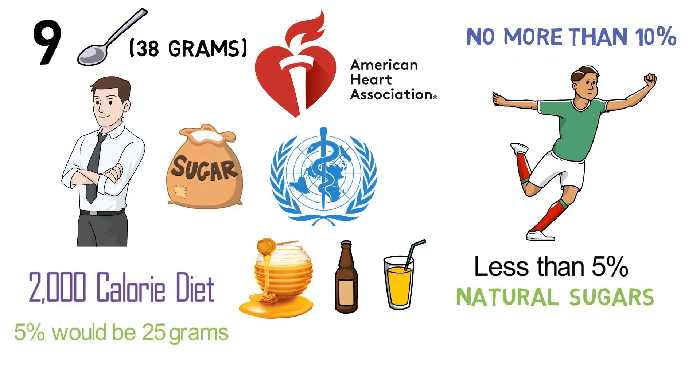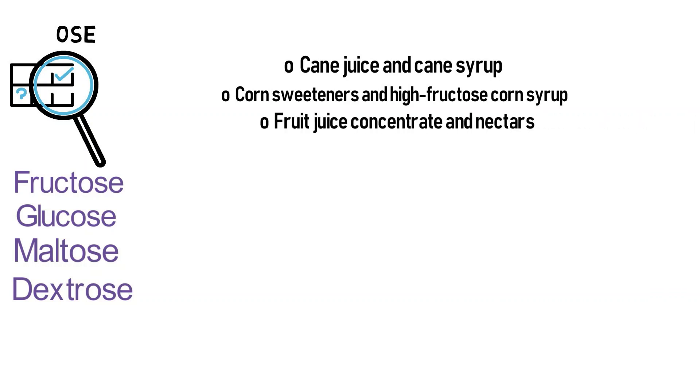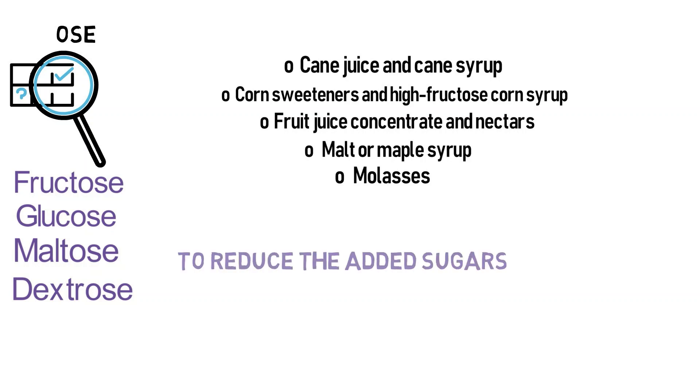Sugar goes by many different names, depending on its source and how it was made. This can make it hard to identify added sugars, even when you read ingredient lists and food labels. You should check for ingredients ending in "-ose". That's the chemical name for many types of sugar, such as fructose, glucose, maltose, and dextrose. Other common types of added sugars are cane juice and cane syrup, corn sweeteners and high fructose corn syrup, fruit juice concentrate and nectars, malt or maple syrup, and molasses.